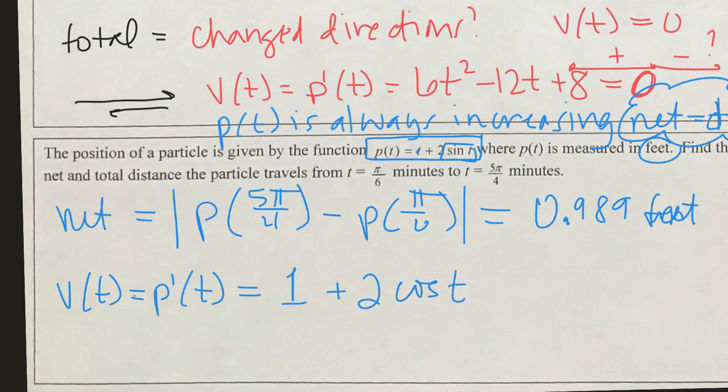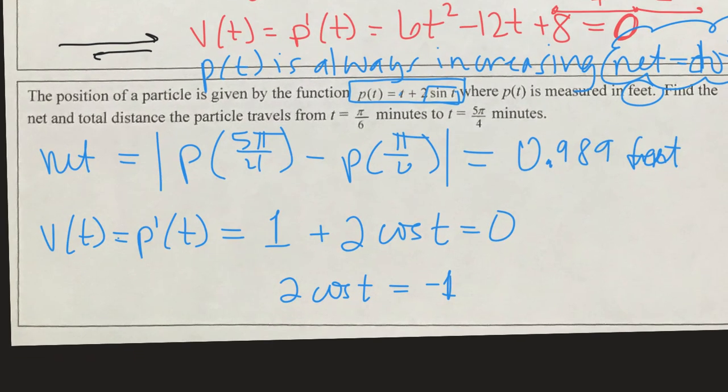And we want to know when that is 0. So here is a trig equation that we can solve for t. We get that the cosine is negative 1/2. So where on our unit circle is the cosine equal to negative 1/2? And that happens to be in the second quadrant at 2π/3.